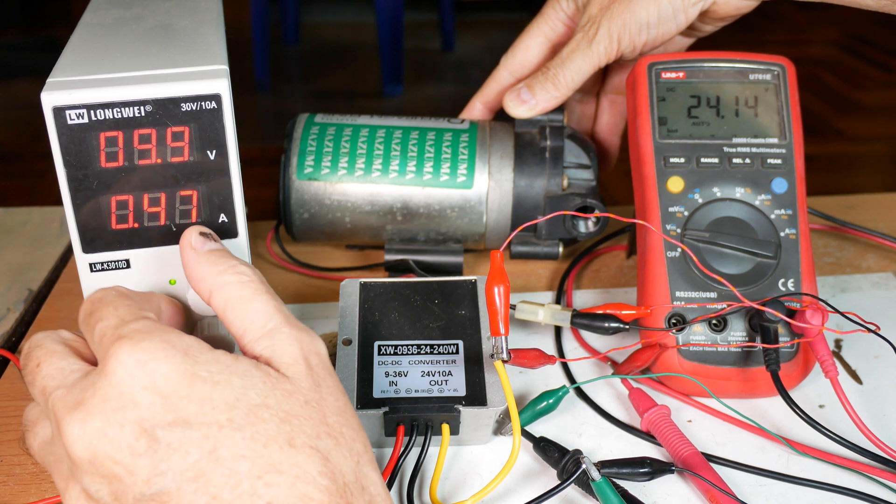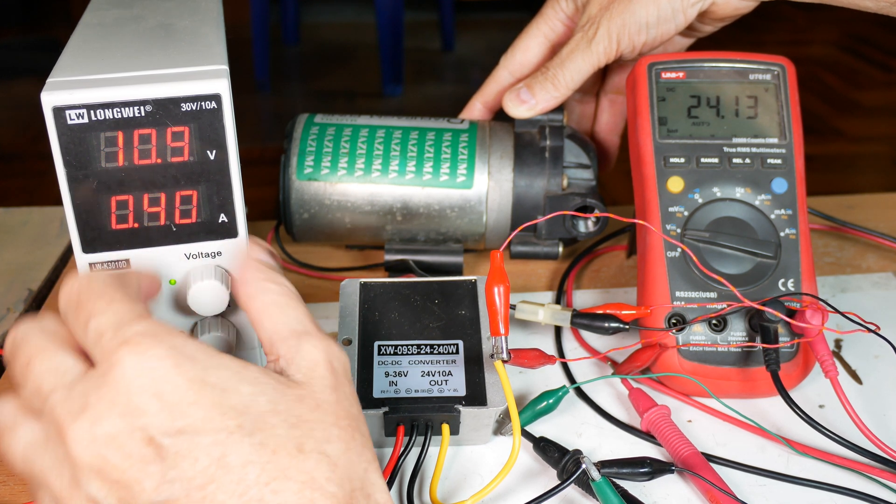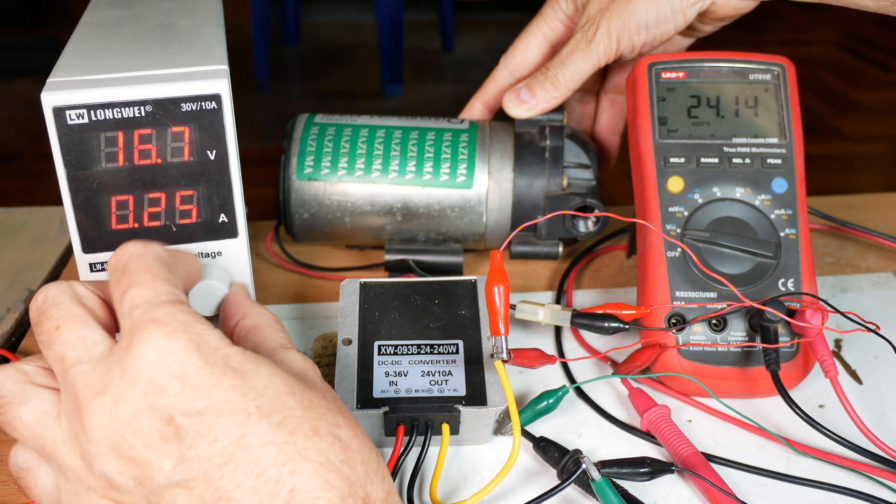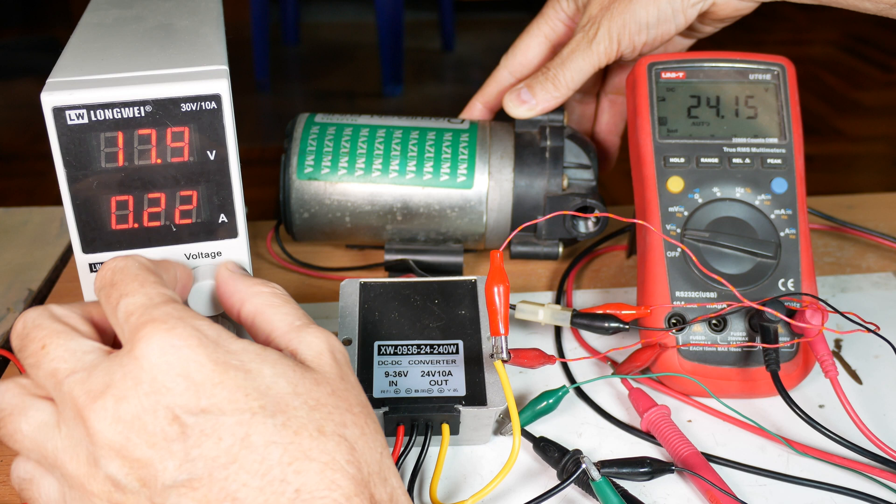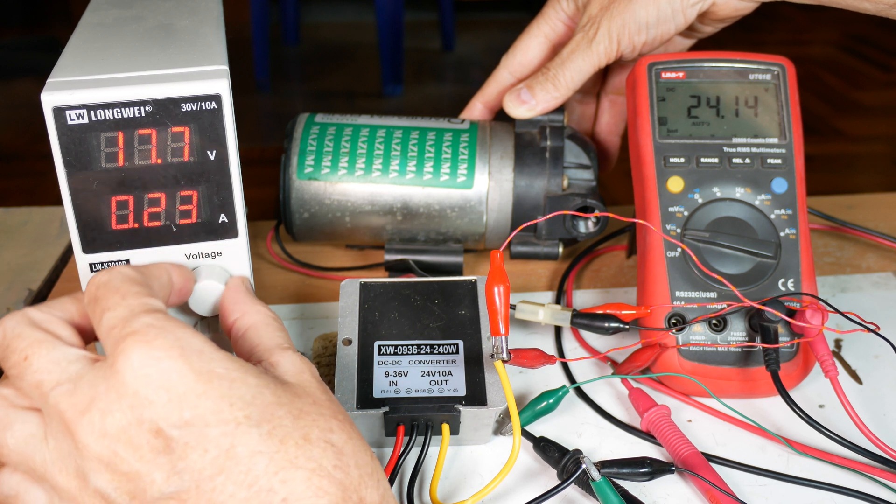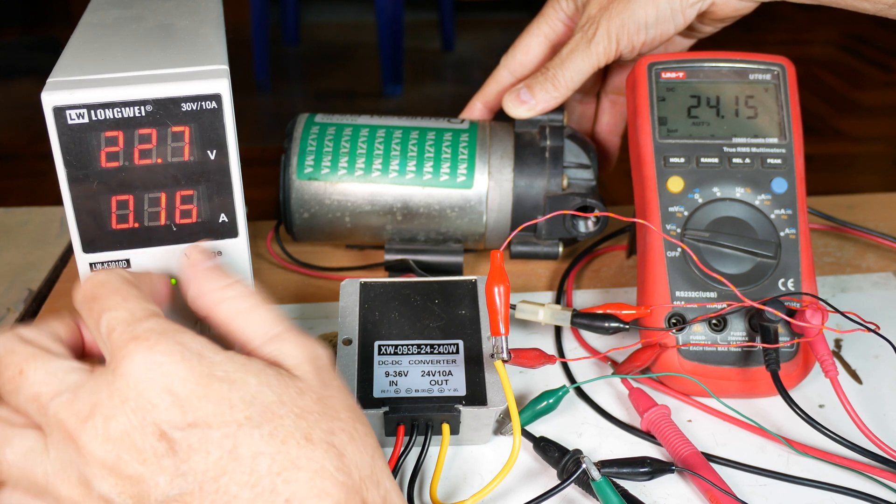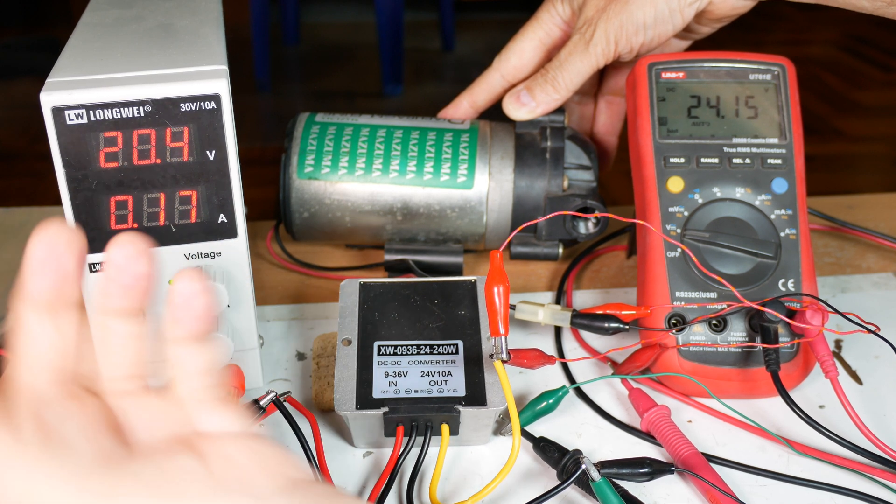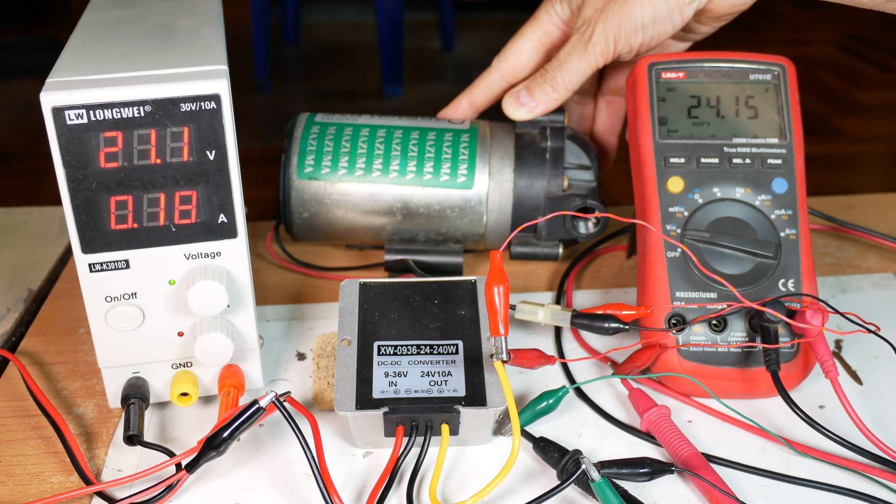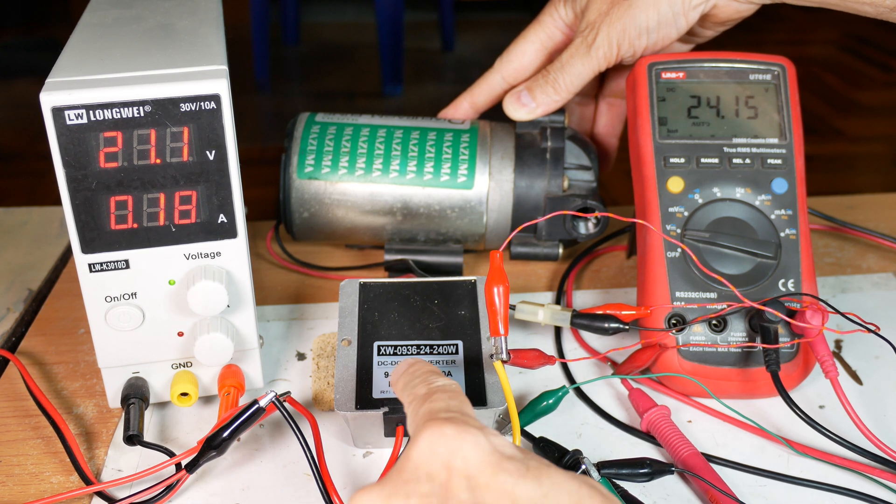So as long as I stay above the nine volts and below the 36 volts, this puts out a nice steady 24 volts DC that I can use to run my pump and for whatever applications I need. Yeah, so that's pretty much it. It's a very nice, easy to use little device.